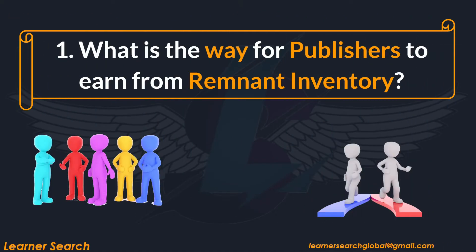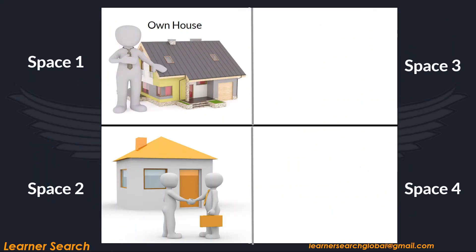What is the way for a publisher to earn revenue from unsold or remnant inventory? To answer this, I would like to go through a real-time example that gives a clear picture of this concept. Let's assume you have one acre of land that has been partitioned into four halves. The first part of your land contains your own house, which is not a revenue source and you cannot make money from that land space. In space two, you rent a building to someone and earn money from it. The third and fourth spaces remain unsold.